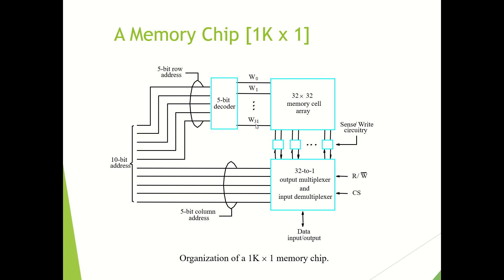32 is equal to 2 to the power 5. So out of 10 address lines, only 5 address lines are passed to a 5-bit decoder, which will activate any one of the word lines. We are designing the 1 kilobyte of memory as a 32 by 32 memory cell. You can imagine an array which contains 32 rows and 32 columns.